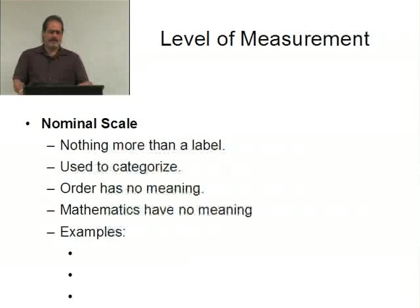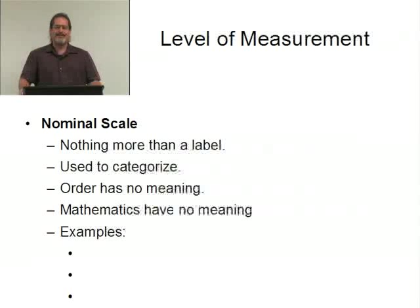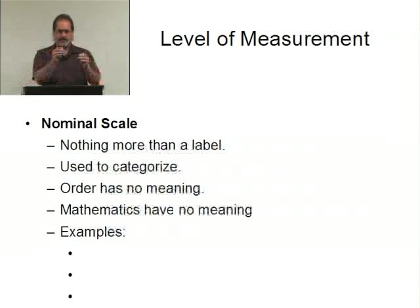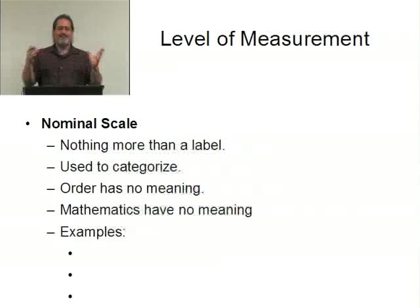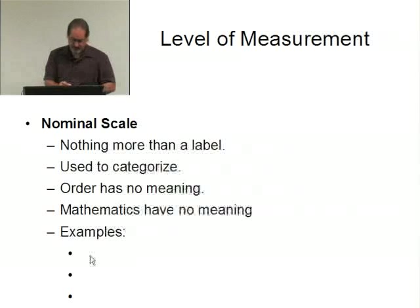Let's start with the idea of the nominal scale. Something that is nominal is nothing more than a label. It's used to categorize and identify different categories. The order that these different values come in has absolutely no meaning, and mathematics has no meaning — and when I say mathematics has no meaning, I'm talking about on the actual values themselves.